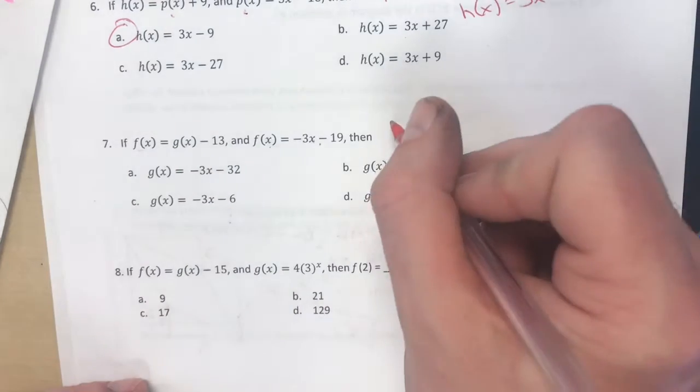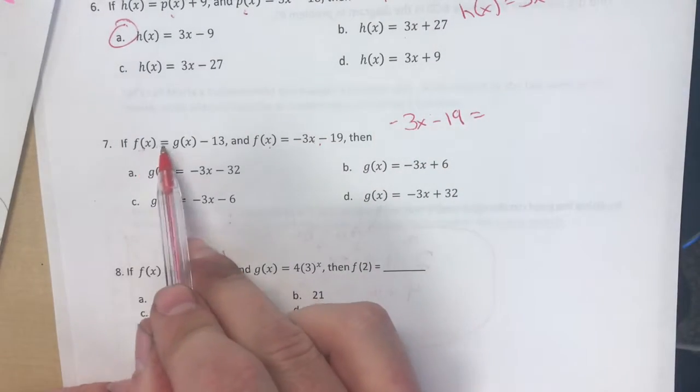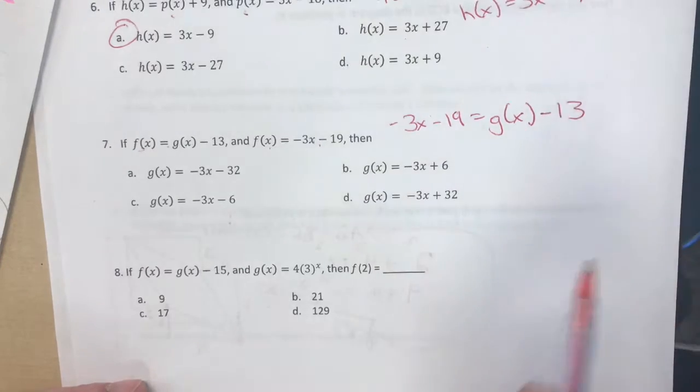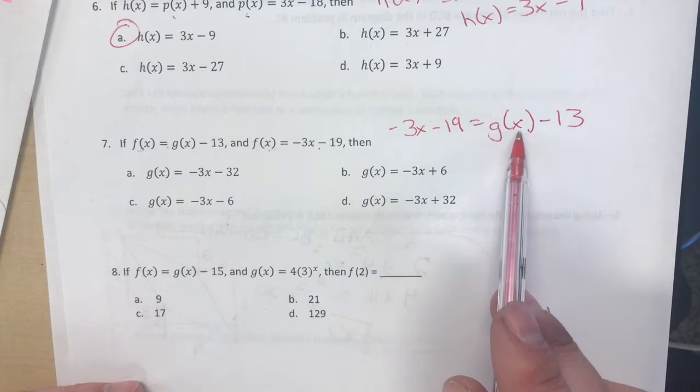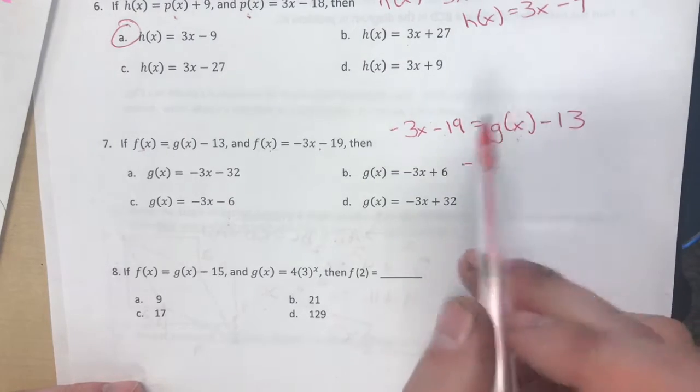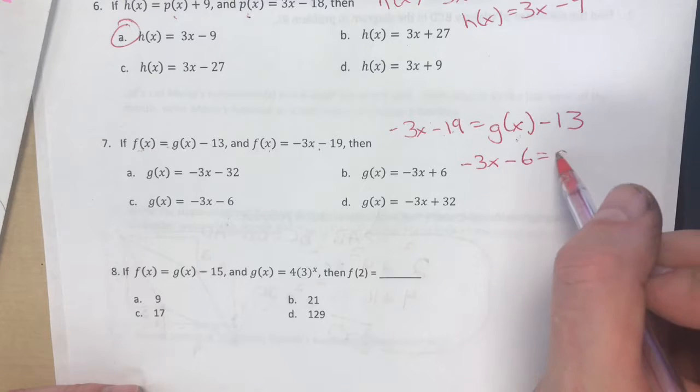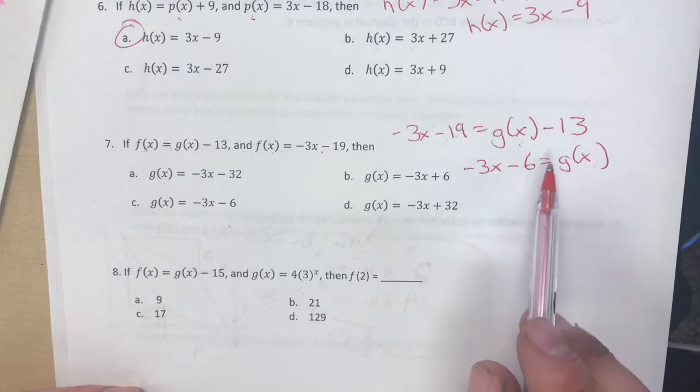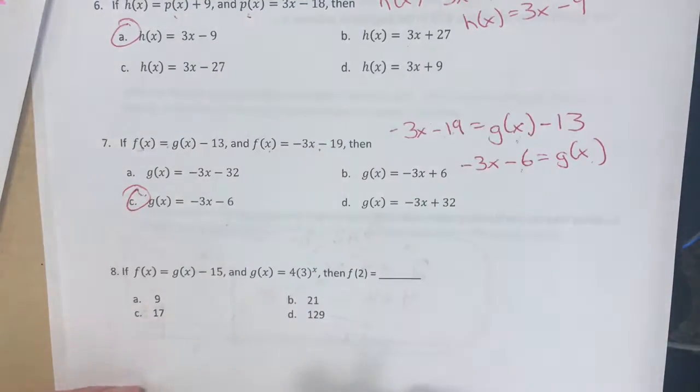So f(x) is negative 3x minus 19. And I know that f(x) equals g(x) take away 13. So now I need to treat this like a variable and solve it for g(x). So I would add 13 to both sides. And I would have negative 3x and negative 19 plus 13 is negative 6. So I would get, it's written kind of backwards, but that's okay. g(x) is equal to negative 3x minus 6, which is choice C.